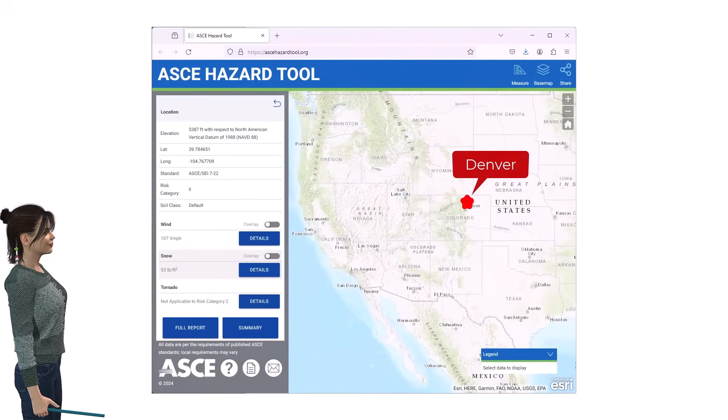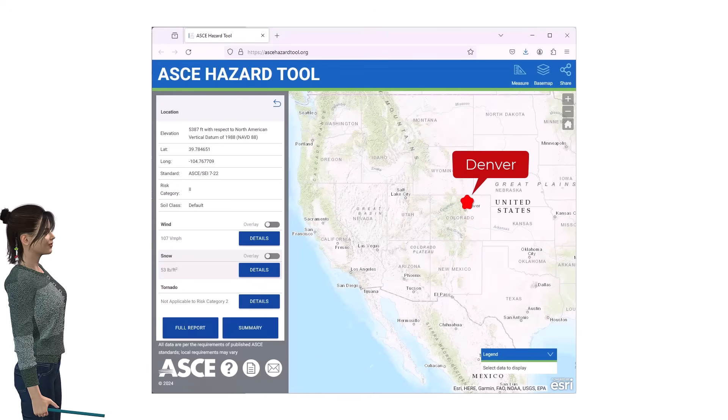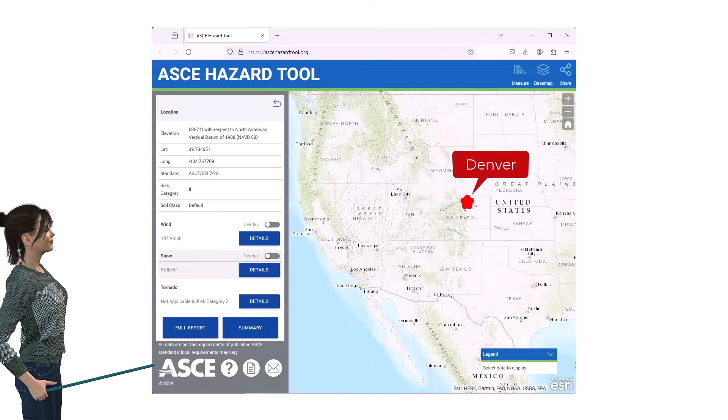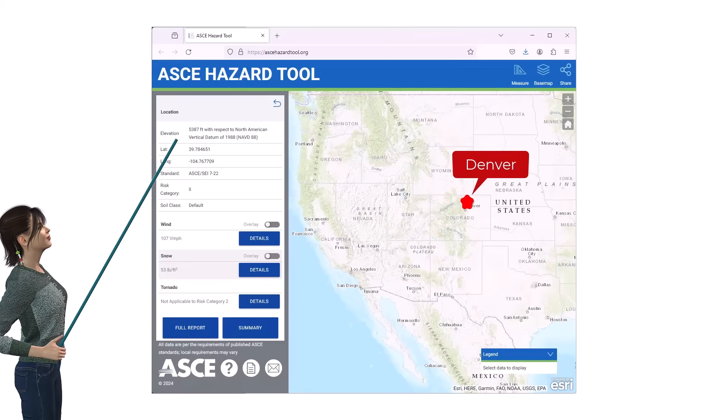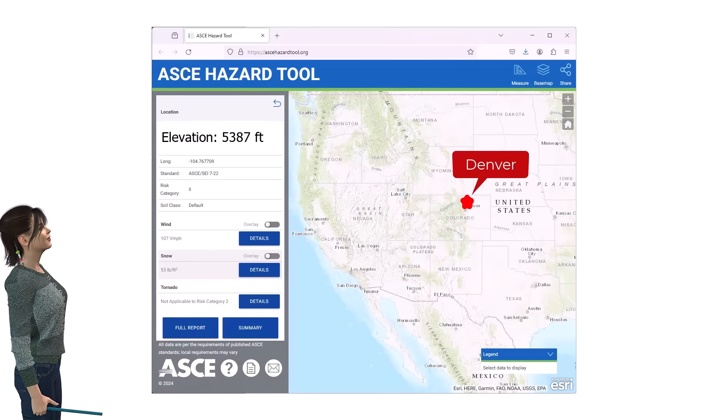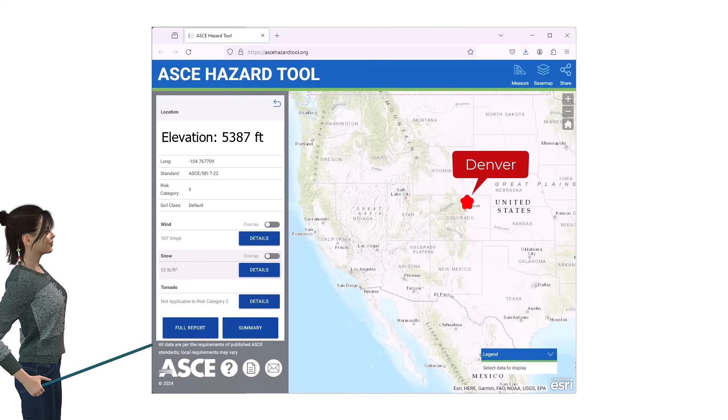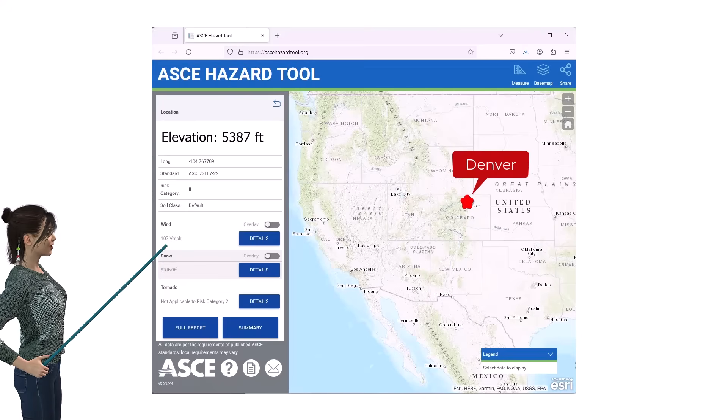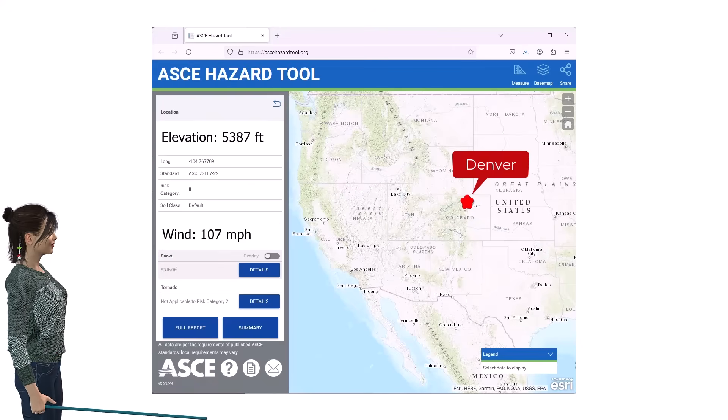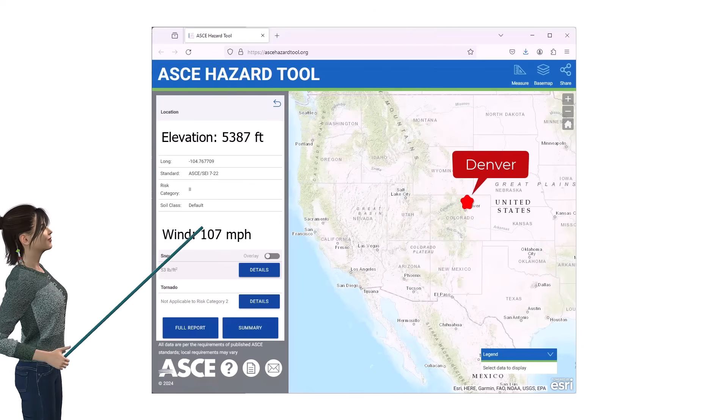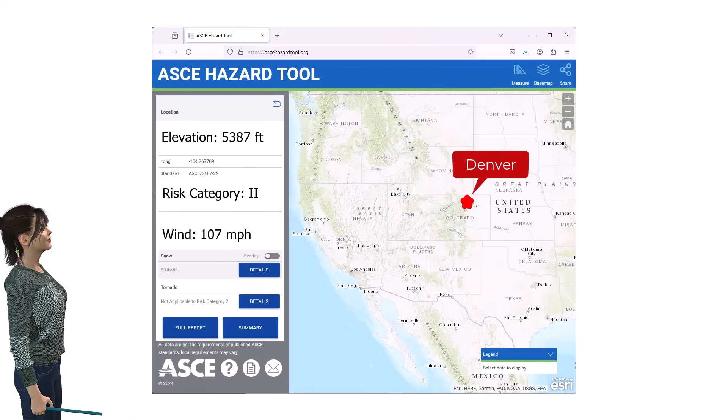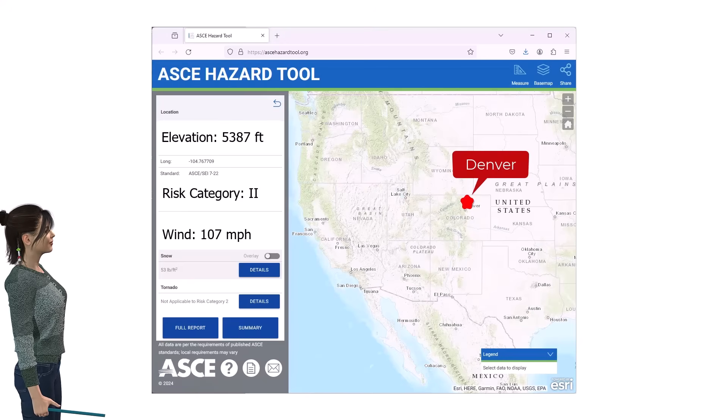Knowing the site's location, we can use the online ASCE hazard tool to retrieve the elevation and the basic wind speed for the building. The site has an elevation of 5,387 feet above sea level. The basic wind speed is 107 miles per hour. This wind speed is for structures in risk category 2, as defined by the ASCE standard, which includes most types of city buildings.